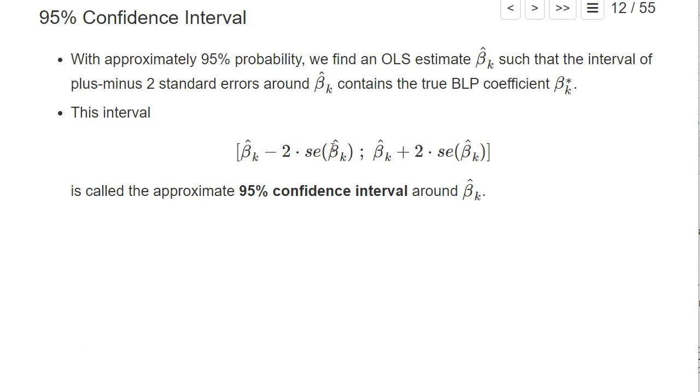If the number of observations n grows large, the standard error of our estimator converges against zero. So this 95% confidence interval gets smaller and smaller. For very large observations, we are pretty sure that the true coefficient is pretty close to our actual estimate.